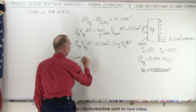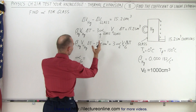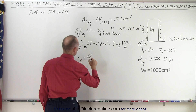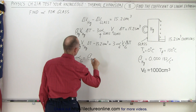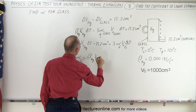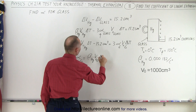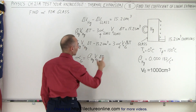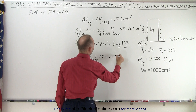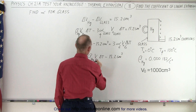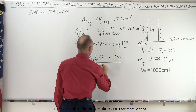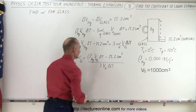The linear coefficient of expansion for glass equals: the volume coefficient of expansion of mercury times the original volume for mercury times delta T, minus 15.2 cubic centimeters, all divided by 3 times the original volume times delta T.